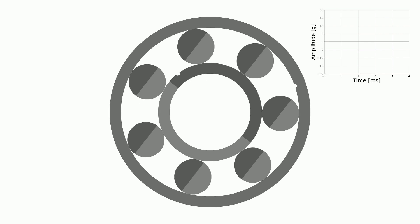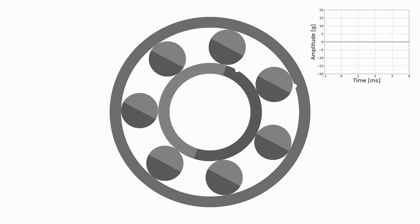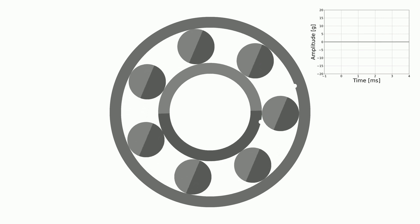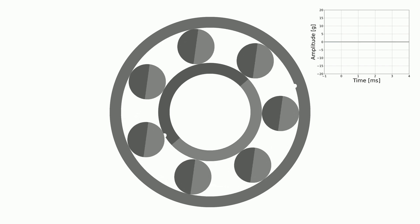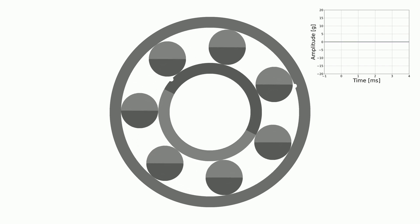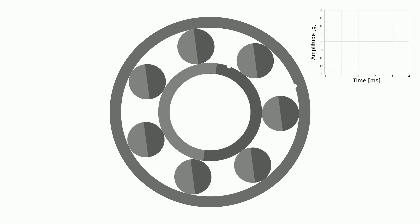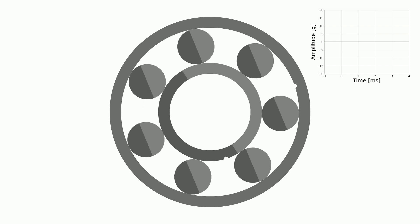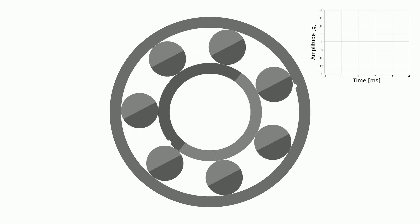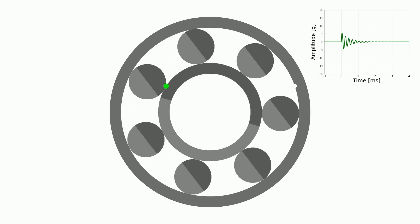Now, if we add a fault to the inner race, there will be two sets of shocks. The inner race shocks have a smaller amplitude as we can see in the graph showing the shocks. This is because the outer race is closer to the sensor used for measurement.